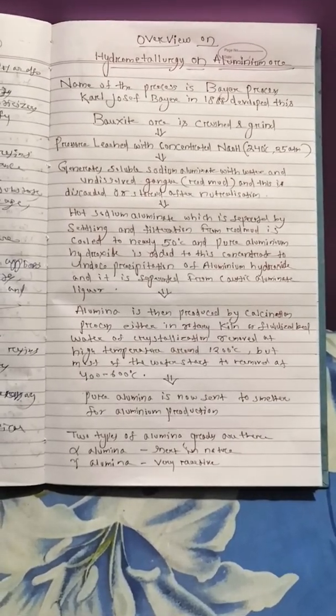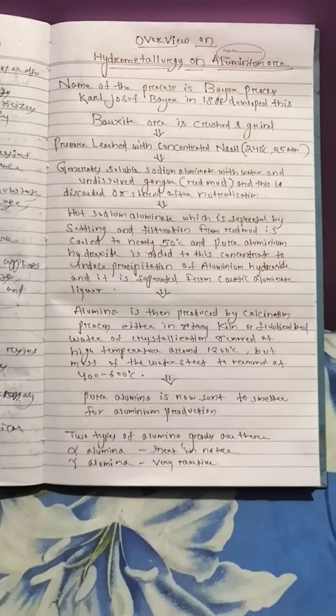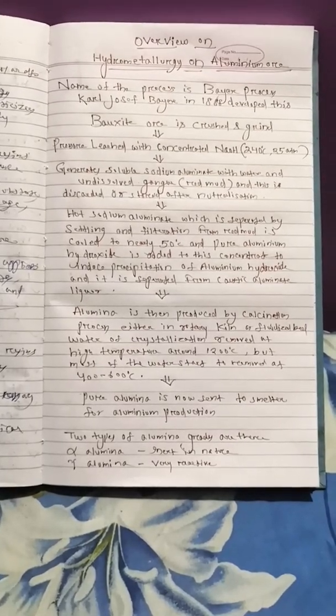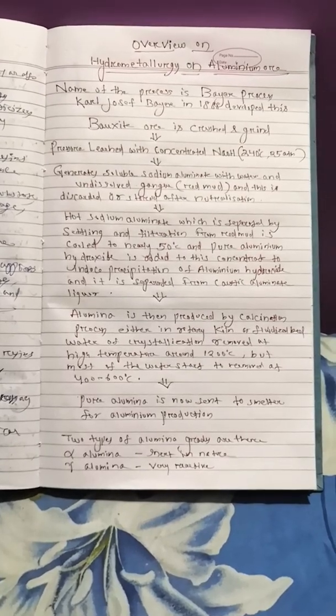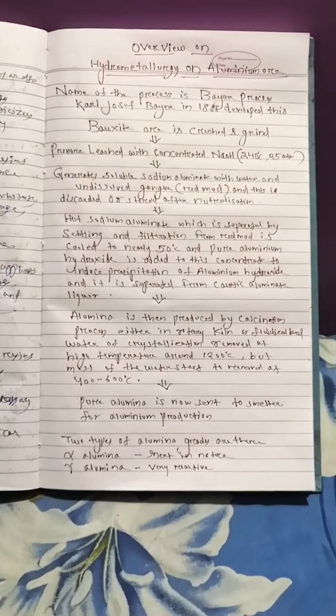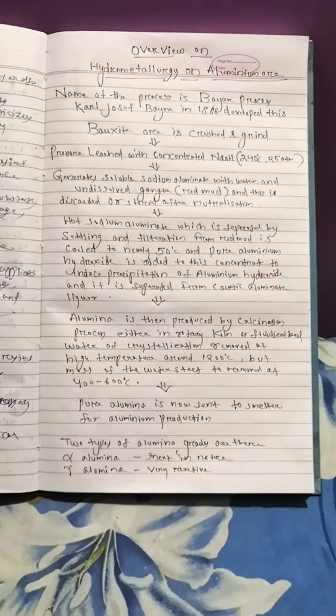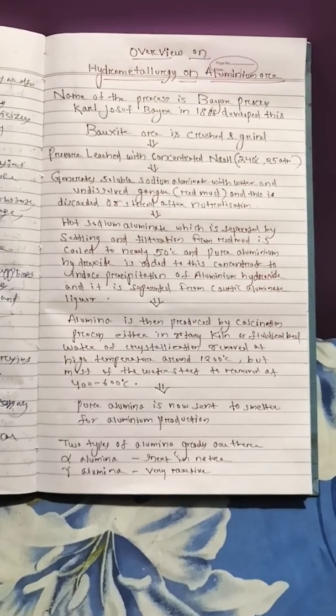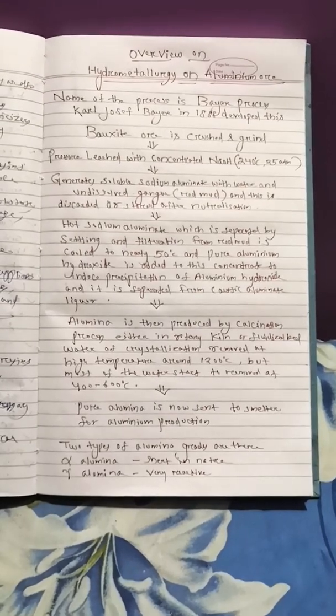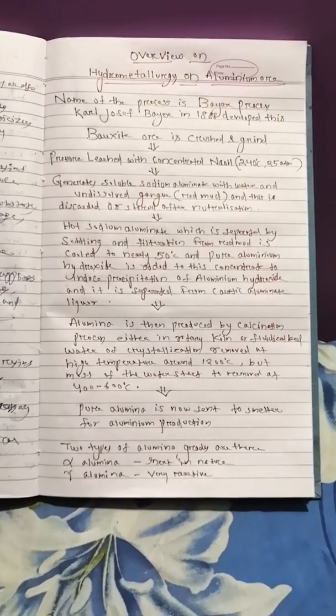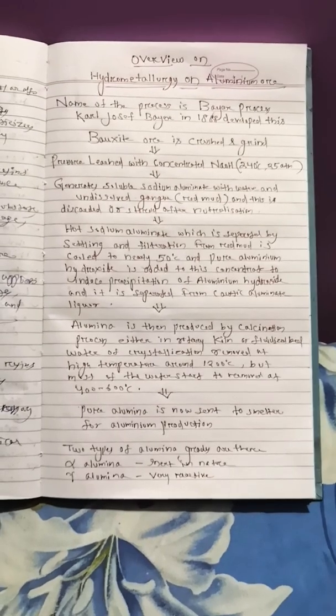The Bayer process is a hydrometallurgical process where we leach the ore using sodium hydroxide solution. The first step is crushing and grinding the bauxite ore to the required size.